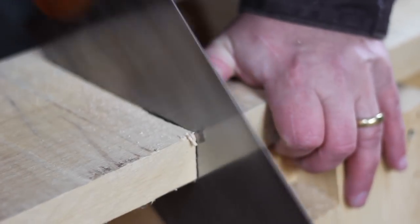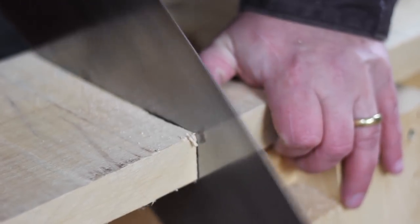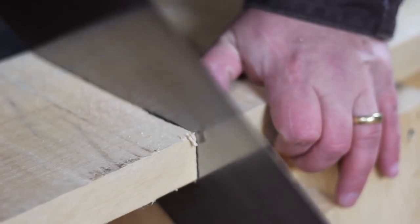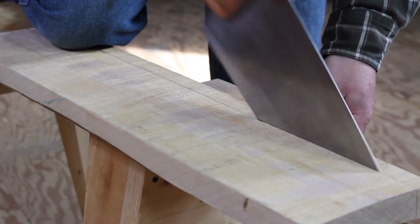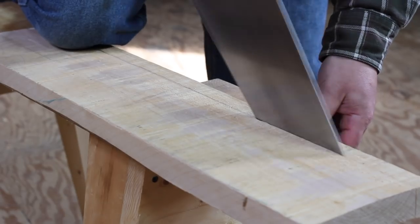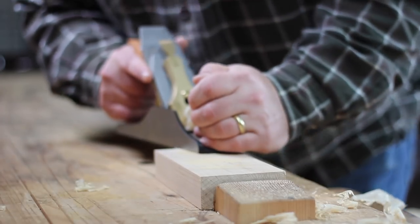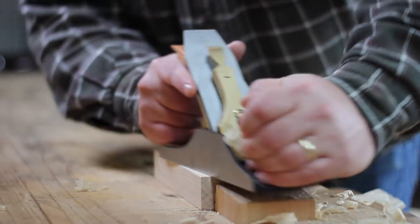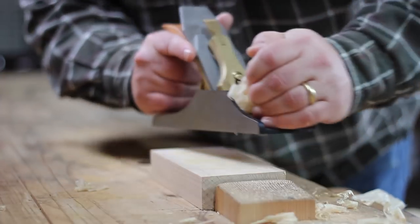I started by preparing the stock. This gauge has only two wooden parts, the fence and the beam. I'm making them both from hard maple for maximum durability. After cross cutting and ripping the two parts out of a larger board, I used a hand plane to make them flat and square on all six sides.